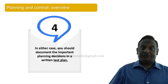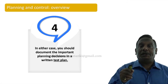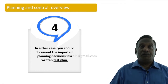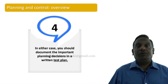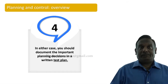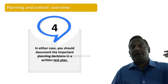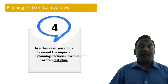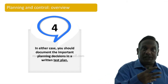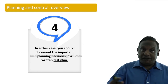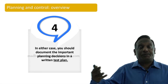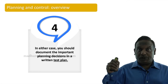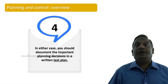In either case, you should document the important planning decisions in a document called the test plan document. Every testing project will have a document called a test plan. Very early in the project you create what we call a master test plan guiding the overall project. As you do various test levels — unit test, integration test, acceptance test — each will have its own test plan. But at the end of the planning process, one document you have to write is the test plan.